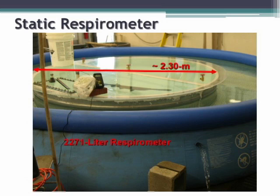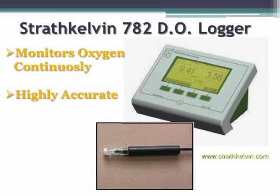Here's a picture of our static respirometer. We have a water bath surrounding it and a spa heater so we can control the water temperatures. We also use a dissolved oxygen meter — the Strathkelvin 782 — which is a continuous, highly accurate oxygen meter that doesn't absorb any oxygen while taking readings.